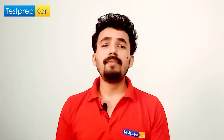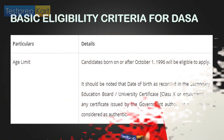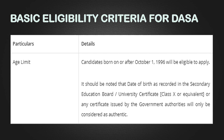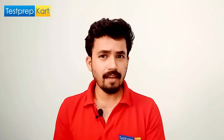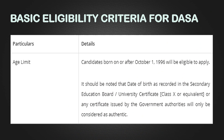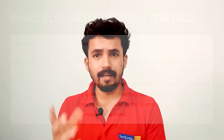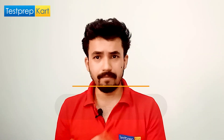Eligibility criteria plays a very important role. Regarding the age parameter, candidates born on or before October 1, 1996 are not eligible to apply — your date of birth should be on or after October 1, 1996. For example, if your date of birth is October 1, 1995, you are not eligible. This date of birth is considered from your Class 10th or Class 12th scorecard.